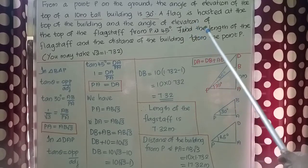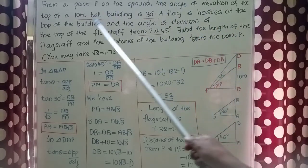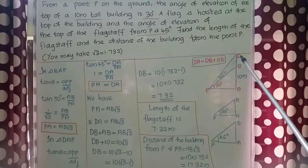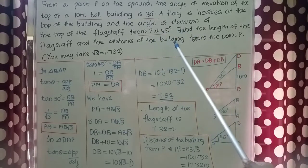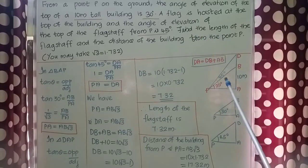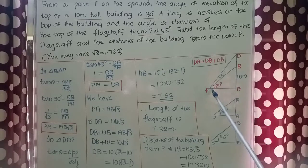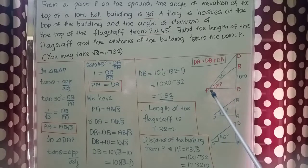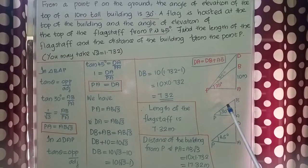Our question is: find the length of the flagstaff, that is BD. There is one more question — the distance of the building from the point P. Here, AB is the building, so the distance of the building from point P is PA. We need to find out the value of PA as well.